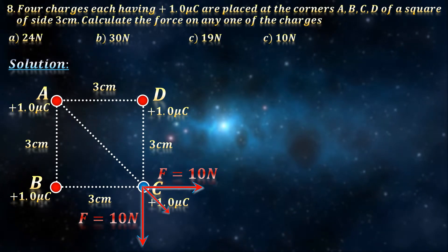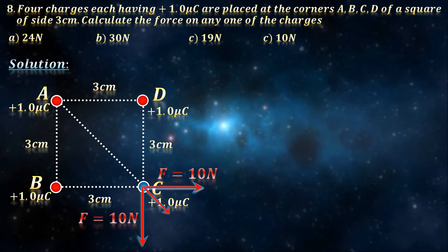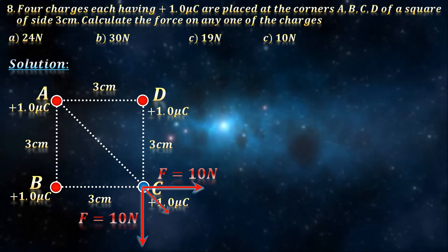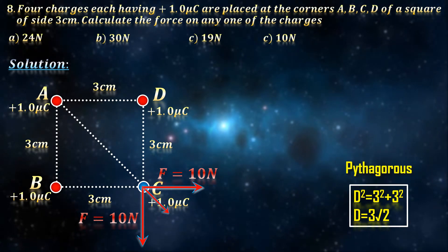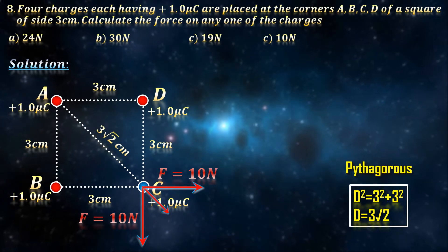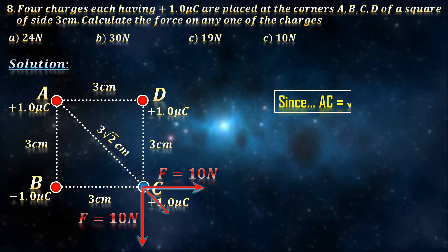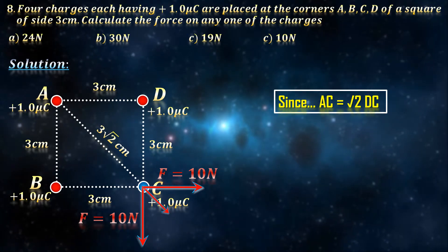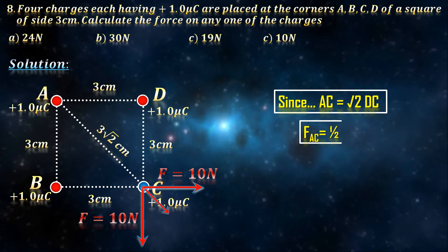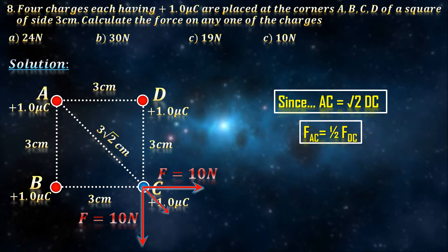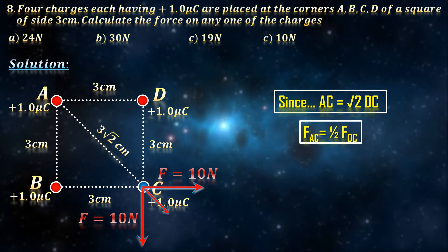To calculate the force due to charge A on C, we need to calculate the diagonal. Recall Pythagoras, you will get its length as 3 root 2 cm. Since the distance is root 2 times more, the force due to A must be squared of root 2 times less, which is half of 10, 5 N.